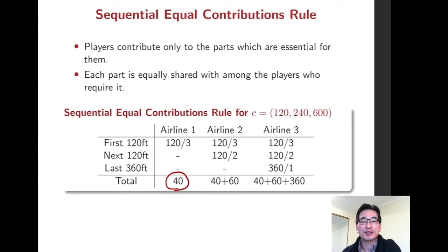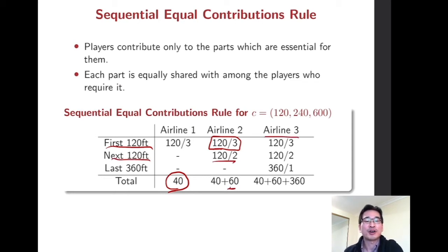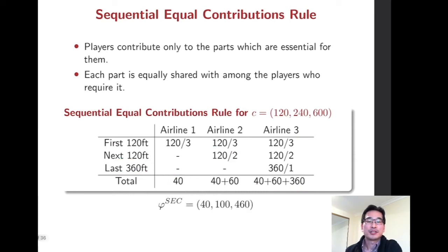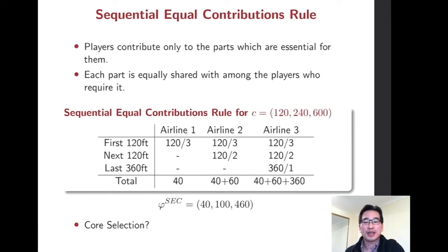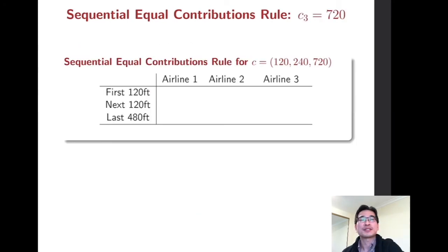So the first airline pays 40. The second airline pays 40 for the first part and 60 for the second part. The largest airline pays 40 for the first part, 60 for the second part, and 360 for the last part. Their total payments are 40, 100, and 460. You can easily check this is in the core.